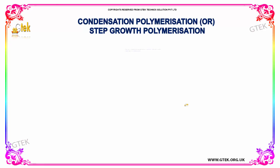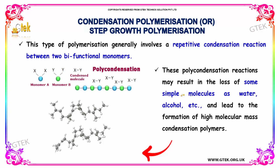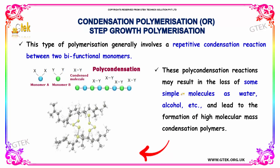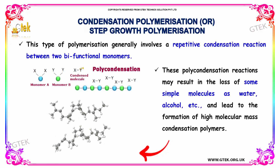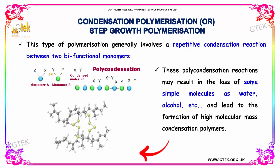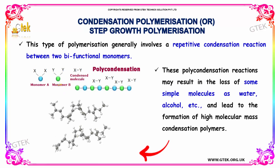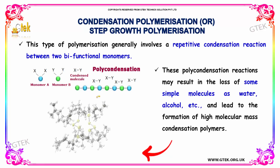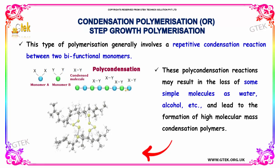Condensation Polymerization, or Step Growth Polymerization, generally involves a repetitive condensation reaction between two bifunctional monomers. For example, monomer A and monomer B are two types of bifunctional monomers. On repetitive condensation, we obtain a Step Growth Polymerization product.